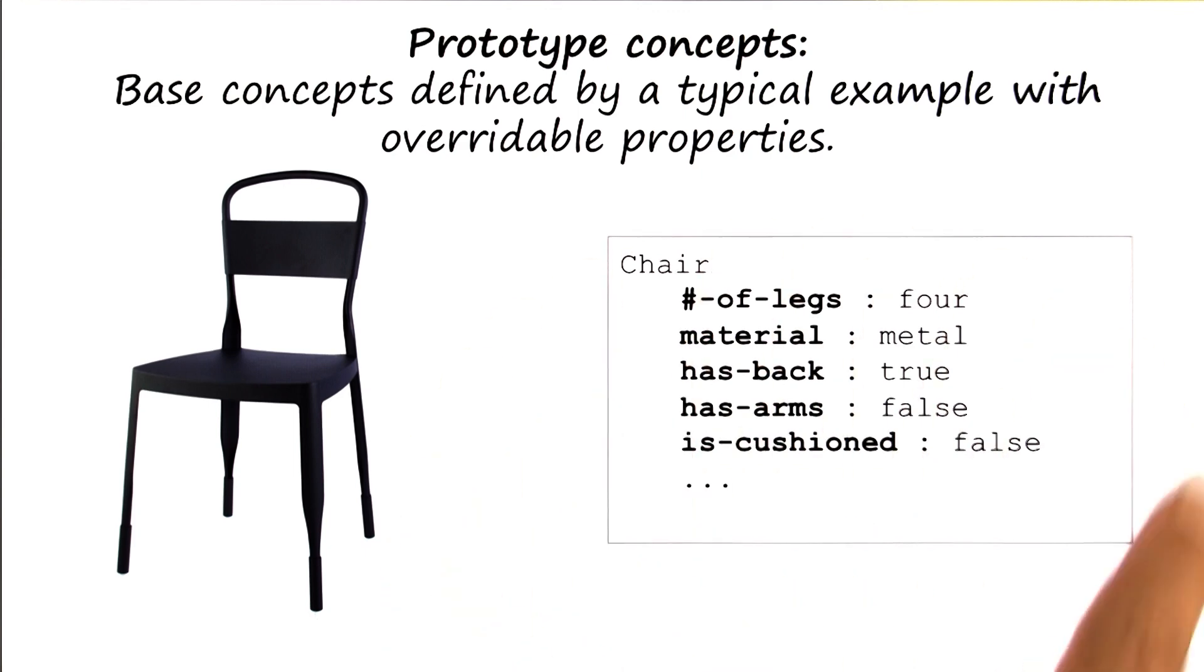Note that these are the typical properties of a chair. Of course, some chairs need not necessarily satisfy all of these properties. That is why there are no necessary and sufficient conditions here. For example, we may come across a chair which is made of wood. Well, we would still consider it a chair, even if it did not strictly satisfy this particular definition.